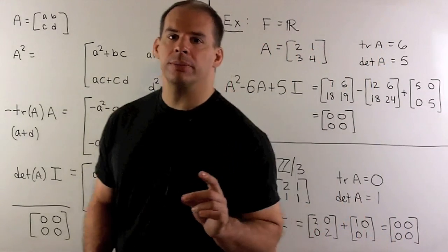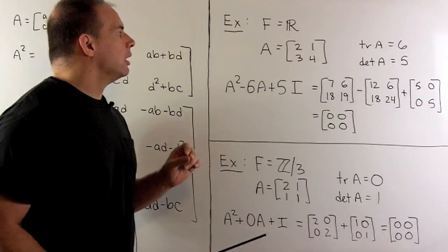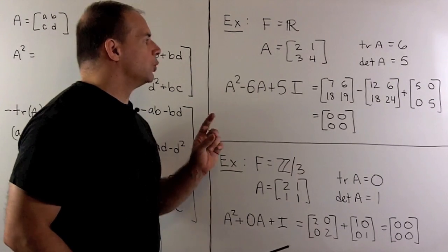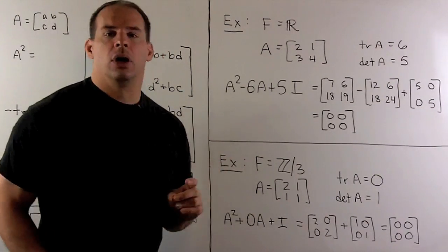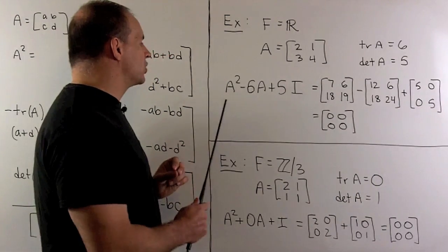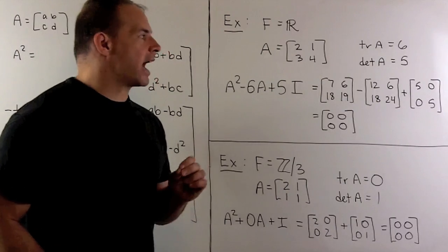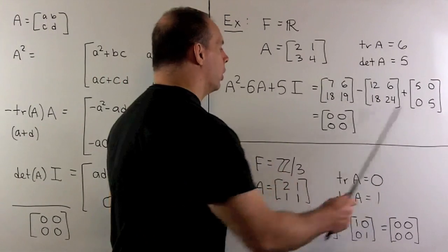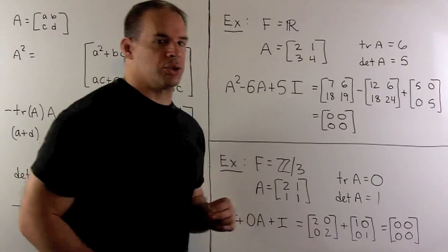For some concrete examples, first I'll start over the reals. So, I'll let our matrix be [2 1; 3 4]. Our trace is 6, our determinant is 5. So, I look at the polynomial A squared minus 6A plus 5I. When we work that out, we note out comes the 0 matrix as promised.